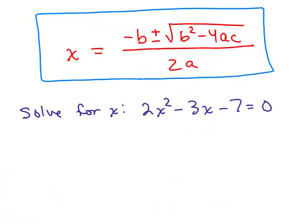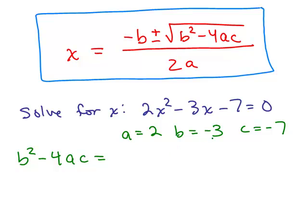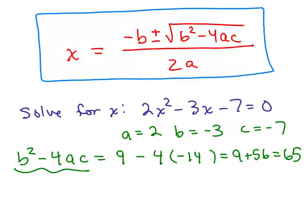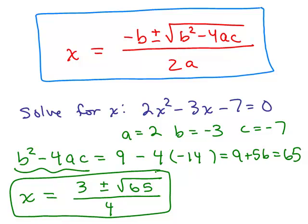Here's a problem. We identify a as the coefficient of x squared, b as the coefficient of x, and c as negative 7. I like to compute the discriminant b squared minus 4ac first: b squared is negative 3 times negative 3, which is 9, minus 4 times a times c. Since a times c is 2 times negative 7, that's negative 14, we get 9 plus 56, which is 65. Now using the quadratic formula: x equals negative b, which is 3, plus or minus the square root of 65, all over 2a, which is 4. So the two solutions are 3 plus the square root of 65 all over 4, and 3 minus the square root of 65 all over 4.